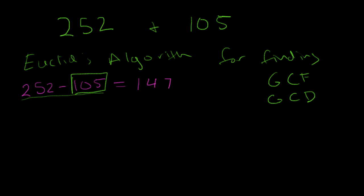So we take 147 and minus 105. We take this number, which is the difference between the original two, and subtract from it the smaller of these two numbers. If we do that difference, we get 42.